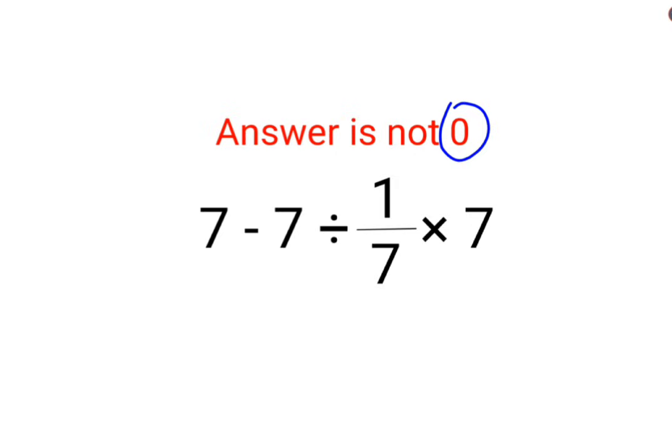We have 7 minus 7 divided by 1 upon 7 multiplied by 7. At this point, these people think that this is cancelled. So we are left with 7 minus 7 divided by 1. So that is 7 minus 7. The answer is 0.